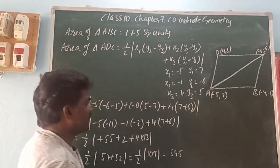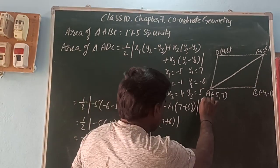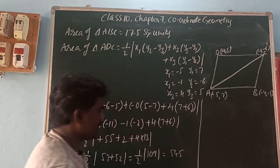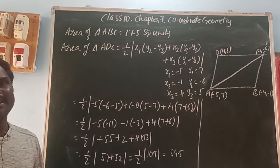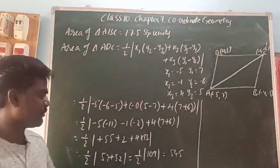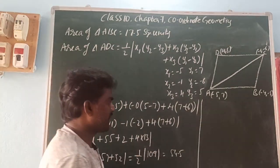Area of triangle ADC = 54.5 square units.